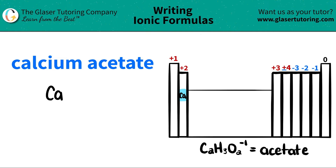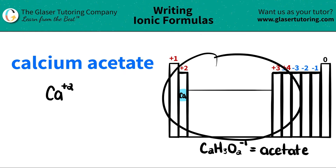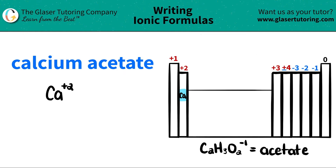So calcium has a plus two charge. Now here's a trick: acetate — if it ends in 'ate' — it's always a polyatomic ion. It's not going to be found on the periodic table, so you have to memorize those.